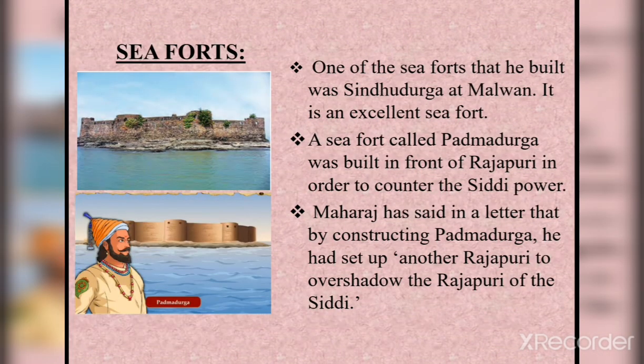Sea forts: one of the sea forts that Maharaj built was Sindhudurga at Malvan. It was an excellent sea fort. To strengthen its construction, five khandis of lead were poured into the foundation. A sea fort called Padmadurga was built in front of Rajapuri to counter the Siddhi power. About this fort, Maharaj said in a letter that by constructing Padmadurga, he had set up another Rajapuri to overshadow the Rajapuri of the Siddhi.